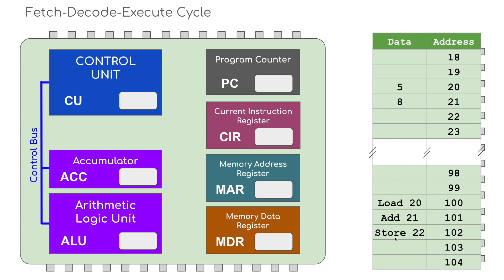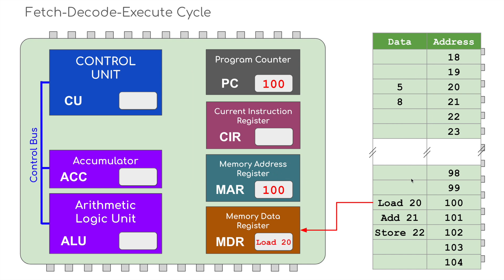I'm keeping this in assembly language with actual denary numbers, but bear in mind it would all be in binary — zeros and ones. The first task: into the program counter, we're going to load memory address 100 — that's where we're going to start. Once we've done that, we're going to load that memory address into the memory address register. From there, we're going to load in the data at memory address 100, which is LOAD 20.